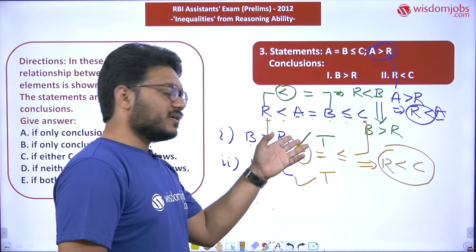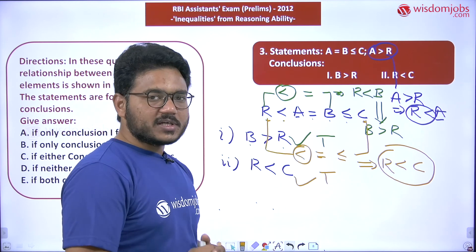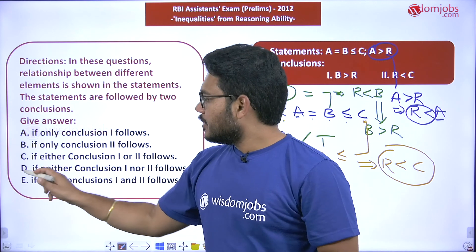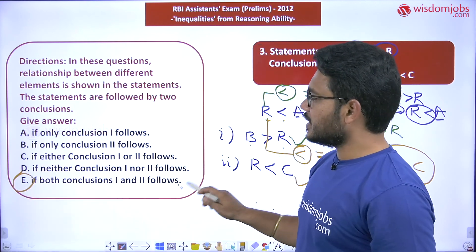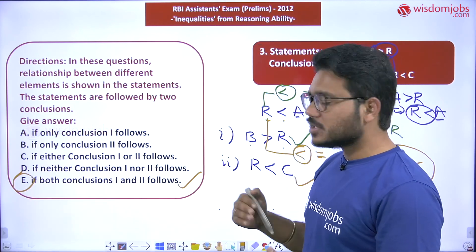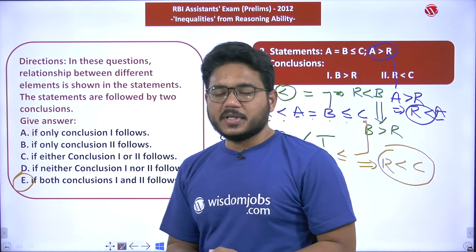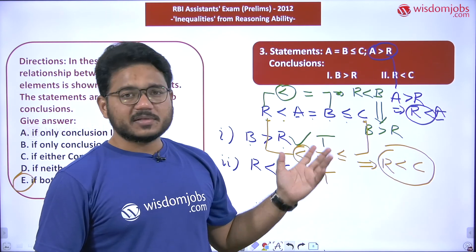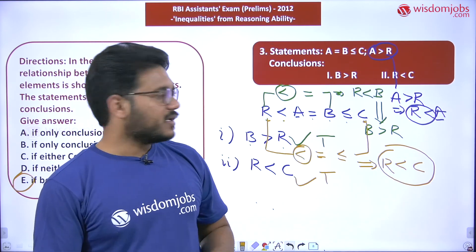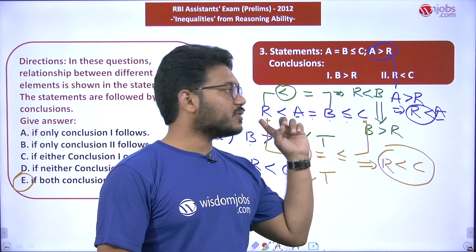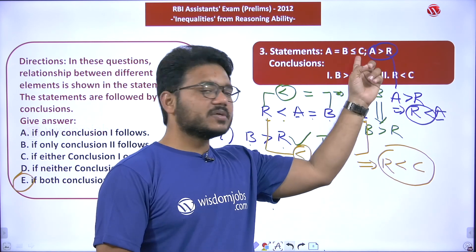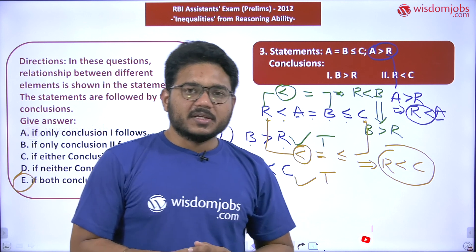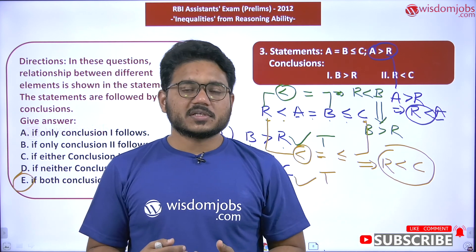Since both conclusions follow from the given statements, the appropriate option is E — both Conclusion 1 and Conclusion 2 follow. This problem was relatively straightforward because the two statements could be easily merged into a single line.